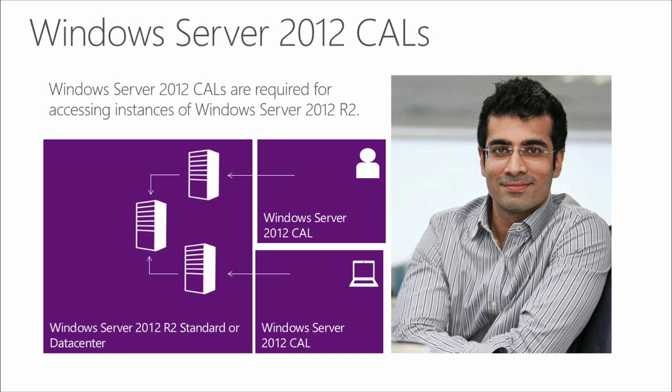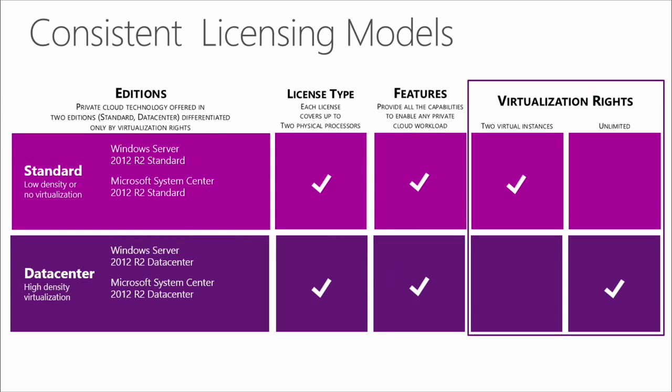Microsoft has adopted the same model as System Center 2012, creating a consistent licensing experience across the private cloud. Both System Center 2012 and Windows Server 2012 are available in two editions — Standard for non-virtualized or lightly virtualized environments, and Data Center for highly virtualized environments. They both have the same licensing model: a processor license covering up to two physical processors on a server, and both editions have the same capabilities.